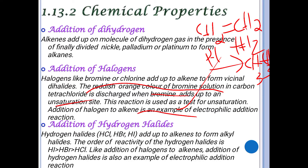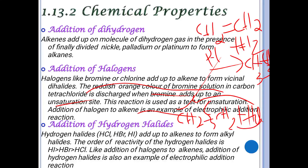Addition of hydrogen halides: hydrogen halides add across the double bond of alkenes to form alkyl halides. For example, CH₂=CH₂ reacting with HCl breaks the double bond — one hydrogen goes to one carbon and chlorine to the other — giving CH₃CH₂Cl. This is also an electrophilic addition reaction.